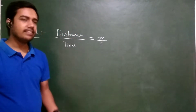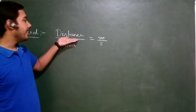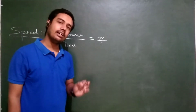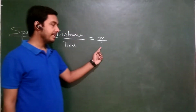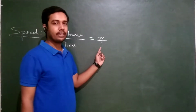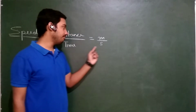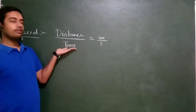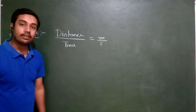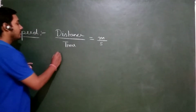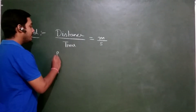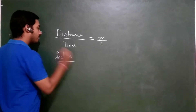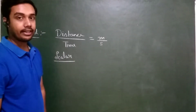Calculating speed is very easy — take the distance, divide it by time, and you will get the answer. The SI unit of speed is metre per second. Now, time is a scalar quantity and distance is also a scalar quantity.